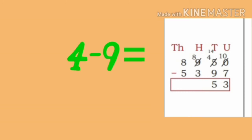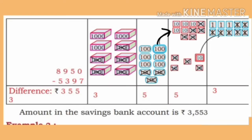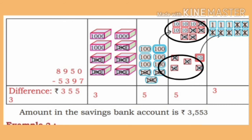Now in the Minuend, 4 remains in the tens place. It is not possible to subtract 9 from 4. So we borrow, giving us 10 plus 4 is 14 tens. On subtracting 9 from 14, we get 5.